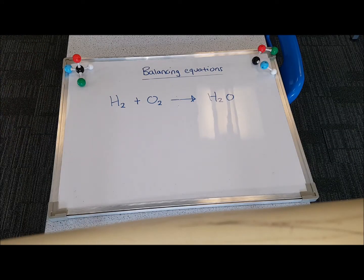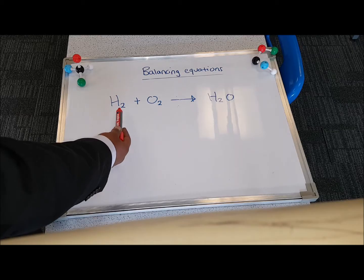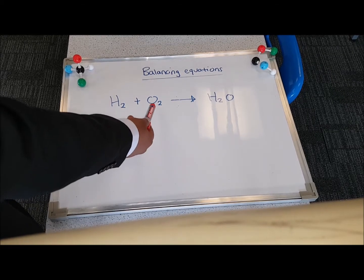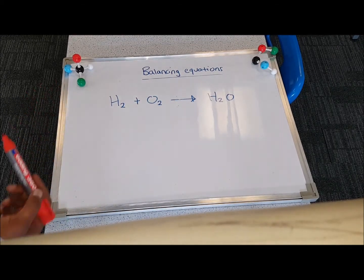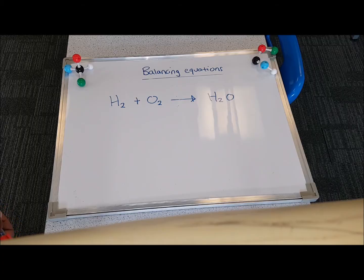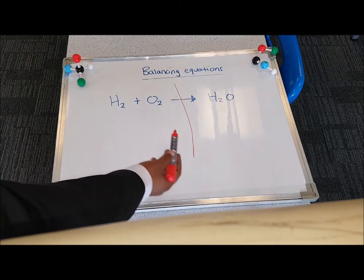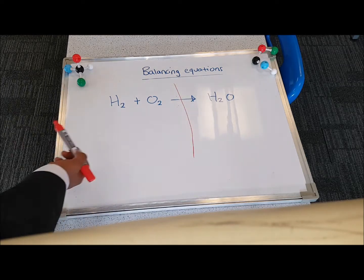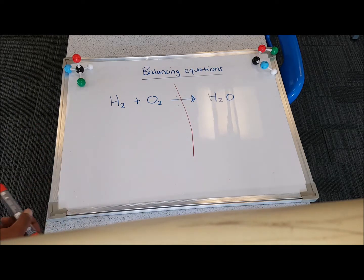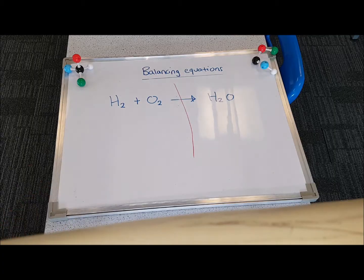Here's my first chemical reaction. I've got the element hydrogen reacting with the element oxygen to give us our compound water. What I would do in this case is I'm going to separate the reactants on the left and the products, or the one product on the right, by drawing a line where the arrow is.